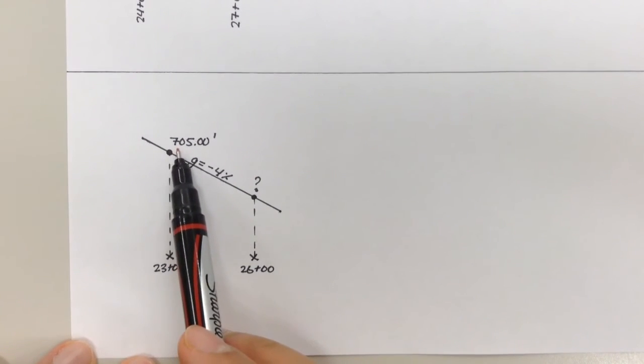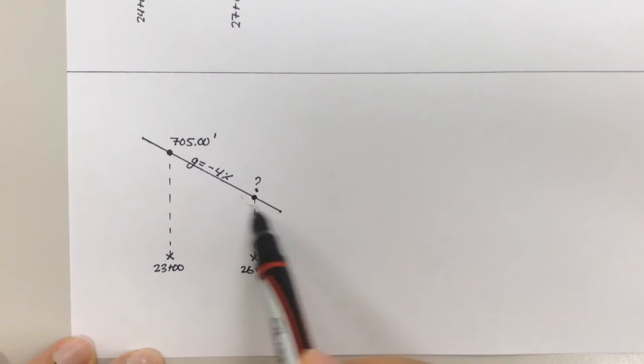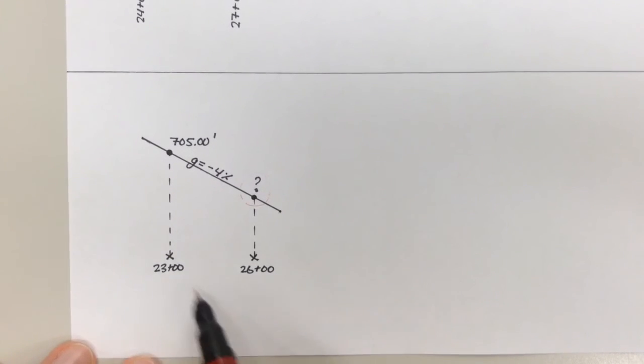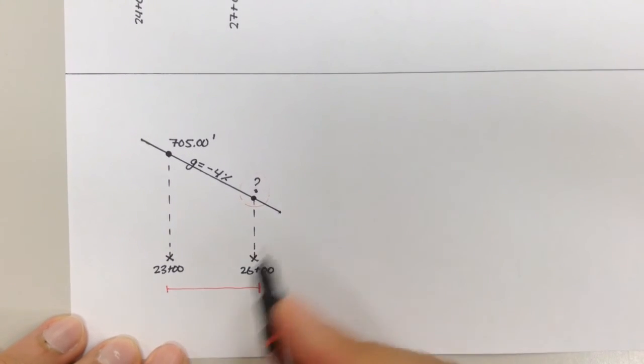So then finally, our last example, we have elevation 705, grade of negative 4%. We want to figure out what this elevation is. We have stations 23 plus 00, and 26 plus 00. So the difference in stations, this distance, is 26 minus 23, that's three stations, right? Stations.